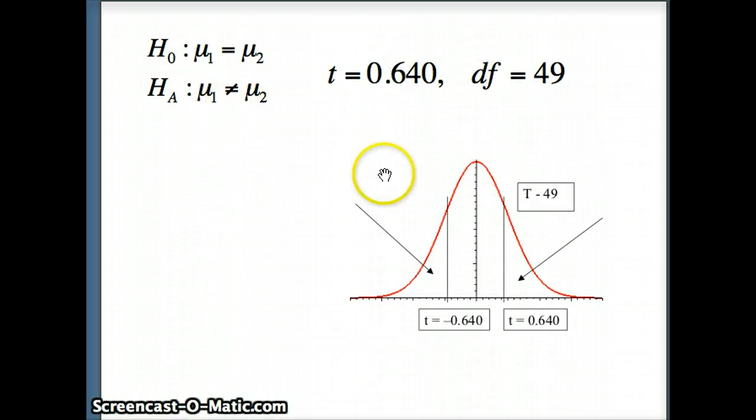This is a two-tail test. So I have 0.64 on the right side, negative 0.64 on the left. The sum of the two areas will give us the p-value.